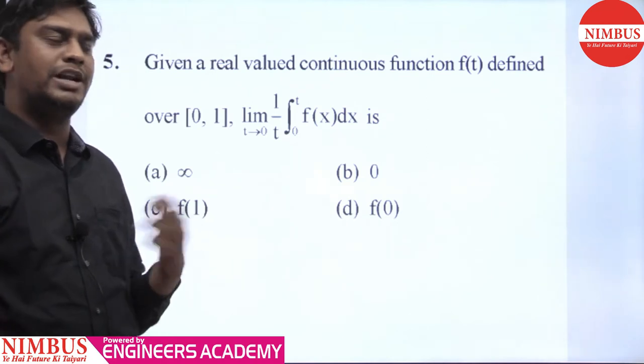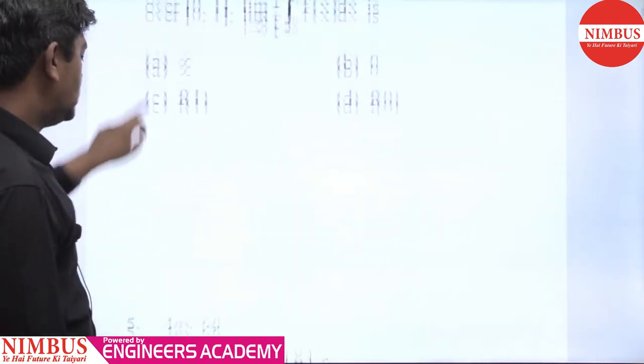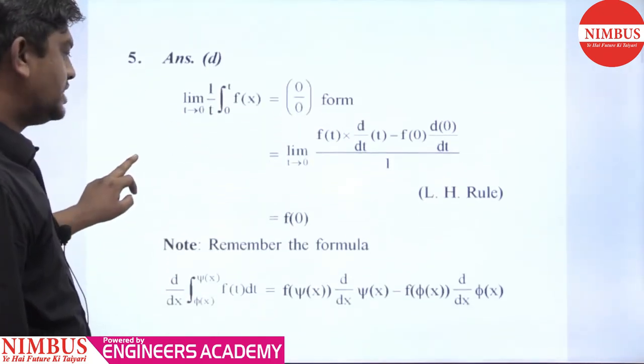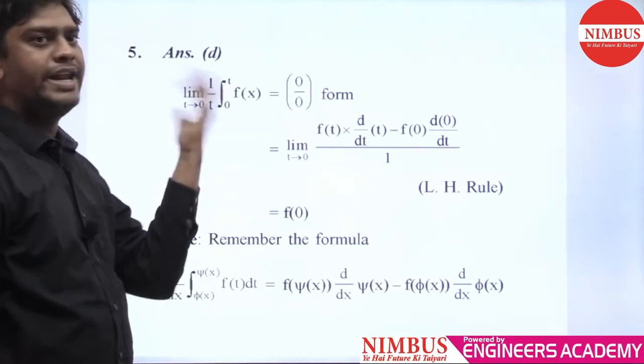Here we have to apply L'Hôpital's rule. We have to take numerator and denominator derivatives. Let us see the solution. We have 0 upon 0 form, so now we have to take the derivative of the numerator.